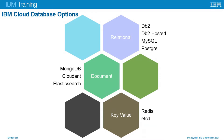For key-value databases, we have Redis, an open source in-memory data structure store used as a database, cache, and message broker. And ETCD, an object-relational database management system with an emphasis on extensibility and standards compliance.